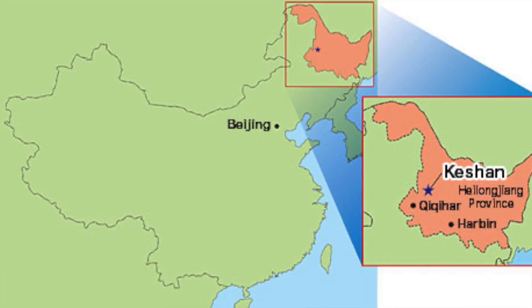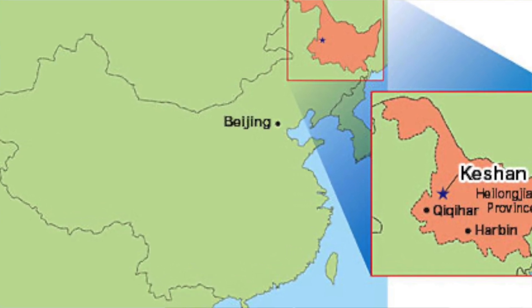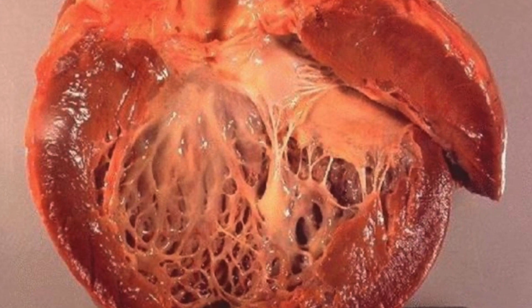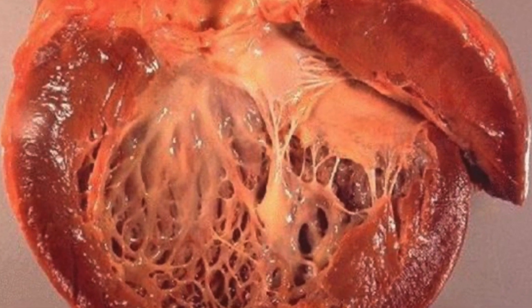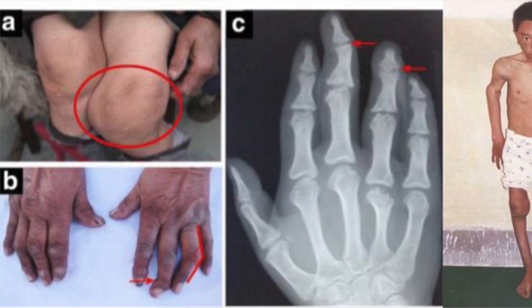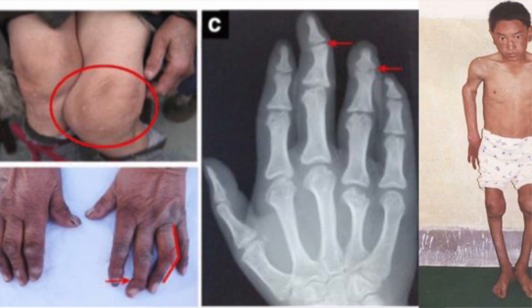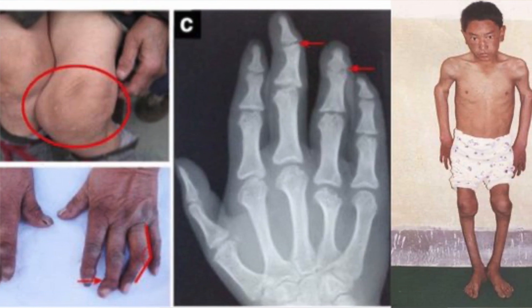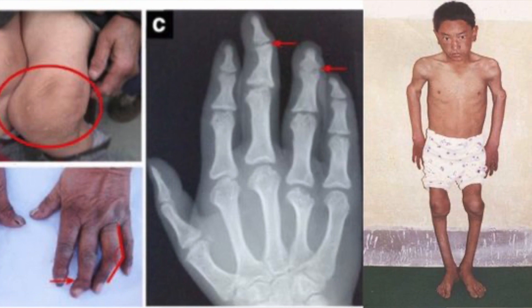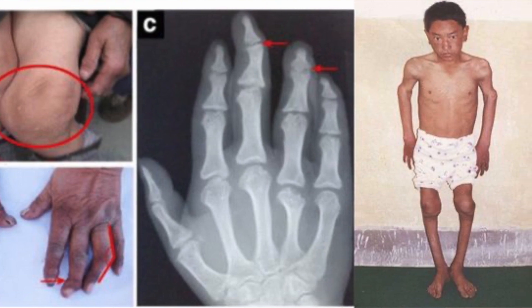Paradoxically, selenium deficiency is found in some parts of China — in the province of Keshan — where the soil content of the metal is very low. Selenium deficiency can manifest as Keshan disease, which presents with multifocal myocardial necrosis and low levels of blood selenium. Children with Keshan disease have multiple hypopigmented patches. The disease is treated by giving selenium at 2 milligrams per kilogram per day.